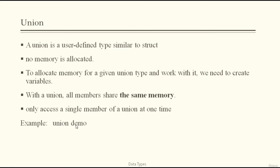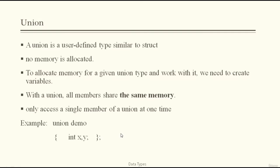That is the key difference between structure and union: in a structure we can access all members simultaneously, whereas in a union we can access only a single member at a time. For example: union demo { int x, y; }. When we declare a variable of demo, memory is allocated and we can access x or y — but not both at the same time.